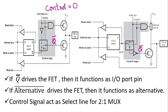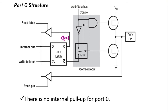If the control signal is 0, it will select the default signal — that is, Q bar drives the FET. If the control signal is 1, A bar drives the FET. Now in the port 0 structure, assume I have written 1 to the latch, so Q is 1. With control signal 0, Q bar will drive the FET. Q bar is 0, so the FET will turn off. Ground is not connected to the pin.